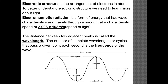Electromagnetic radiation is a form of energy that has wave characteristics and travels through a vacuum at a characteristic speed of 2.998 times 10 to the 8th meters per second, which is the speed of light.